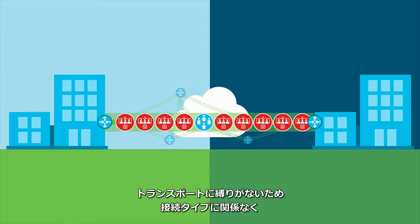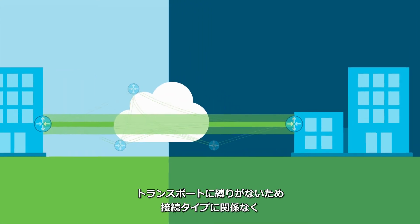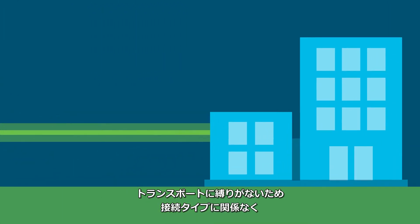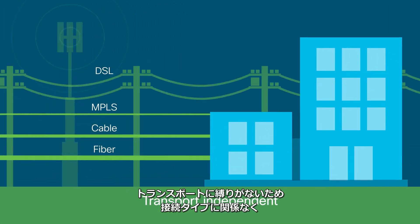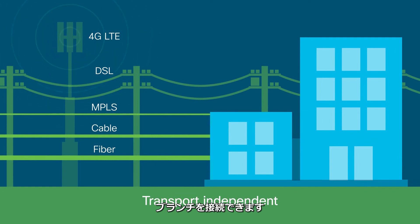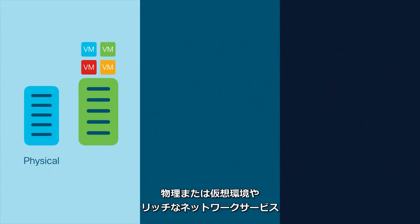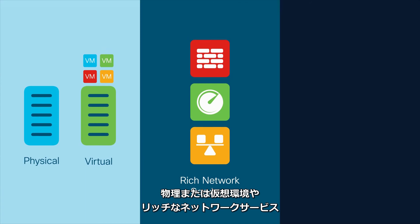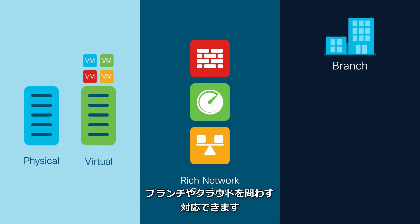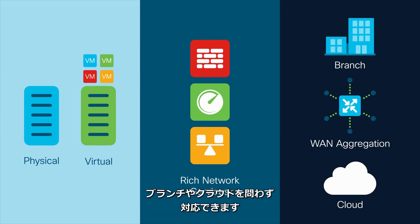And to maximize flexibility, Cisco SD-WAN is truly transport independent, enabling branches to connect over any type of connection. That flexibility extends to endpoints, delivering support for physical or virtual environments, rich network services, and across-the-branch WAN aggregation or cloud.